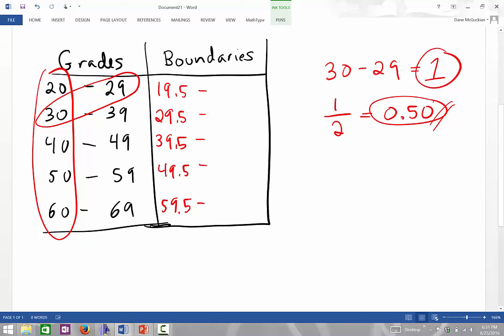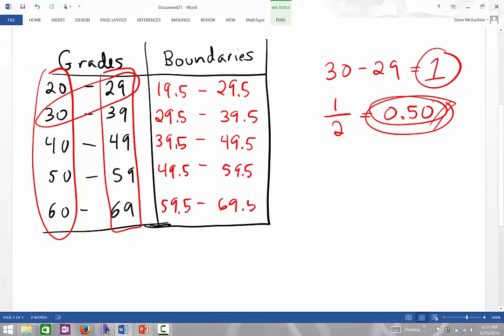To get the upper class boundaries, I take that same number, that 0.5 number, and I add it to all the upper class limits. So I'll get 29.5, 39.5, 49.5, 59.5, and finally 69.5.